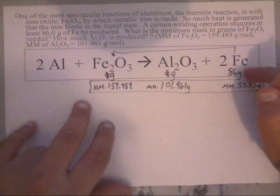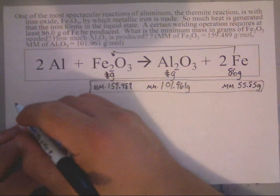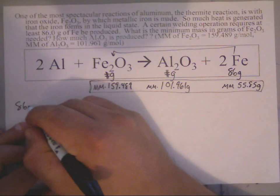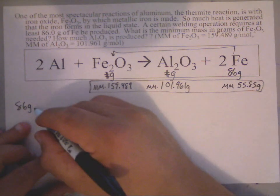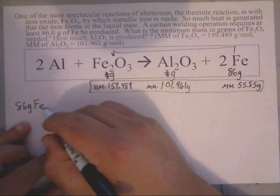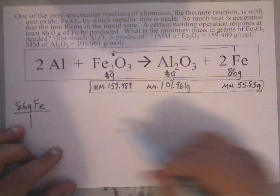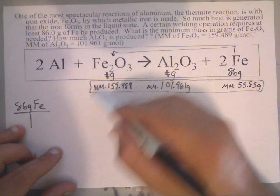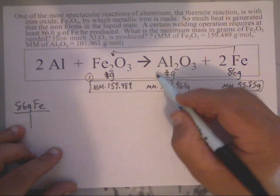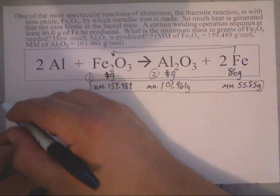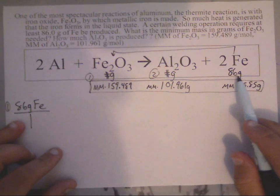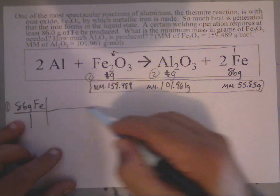Now what we're going to have to do is start with this given. We have 86 grams of Fe. I'm going to put that over one. I've got to go to this one first. Here's my first one: I'm going to go from 86 grams of Fe and go to the iron 3 oxide.